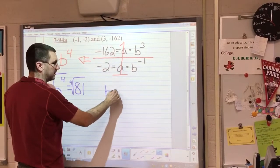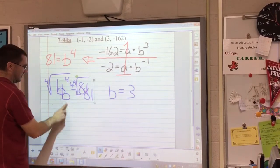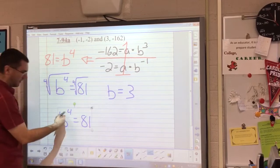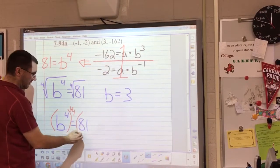And you get b equals 3. Or you could take this to the one-fourth power because you have four multipliers equal to 81. You want one out of the four multipliers, so do 81 to the one-fourth power and you also get b equals 3.